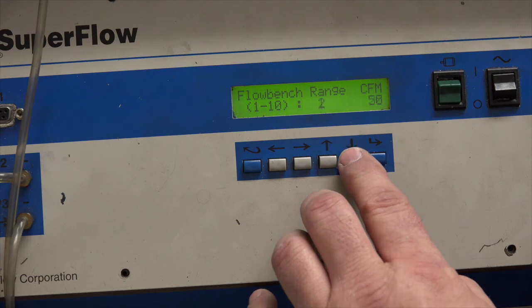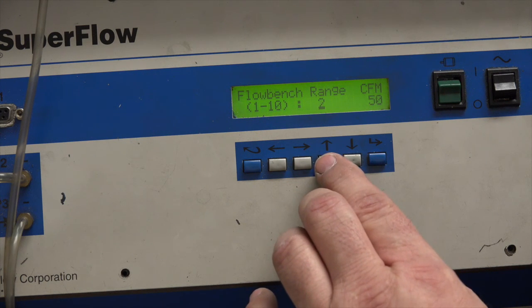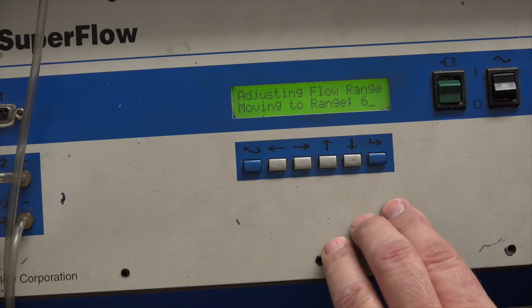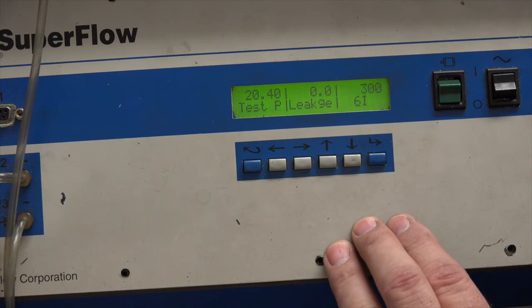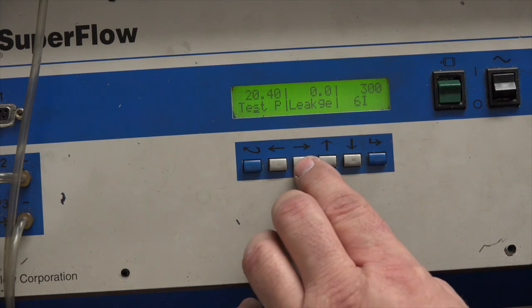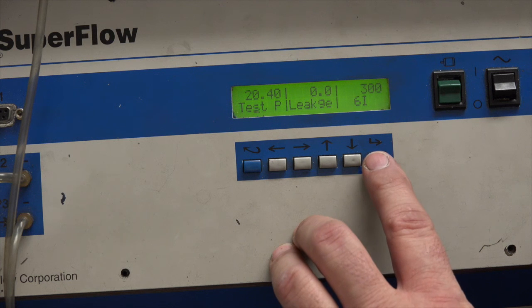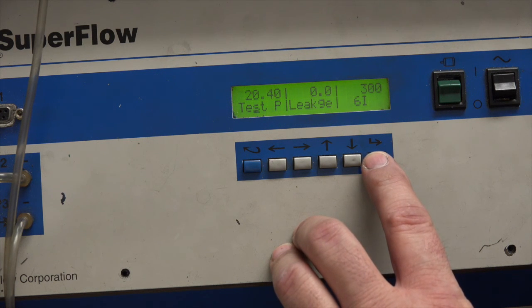When flowing a carburetor, we're taking the cumulative effect. So 300 CFM, in theory, should allow us to flow a 1200 CFM carburetor. So we're looking at the intake, 300 CFM, and this is the place we need to be to run our tests.